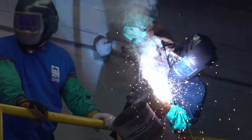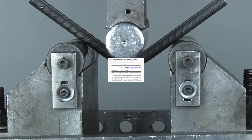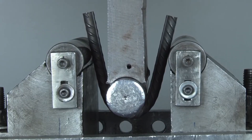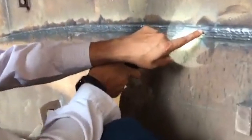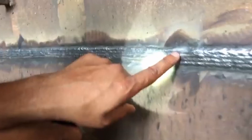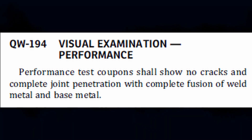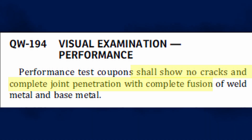Let's talk first about mechanical tests. For mechanical test specimens, this is referred to in QW-452 of ASME 9. This table determines the number of specimens to be made for each type of test and specifies the specimen requirement depending on the welding position. The visual examination requirement and acceptance criteria are referred to in QW-194, which states that the bend test as visually examined shall have no cracks and complete joint penetration with complete fusion with the weld and base metal.